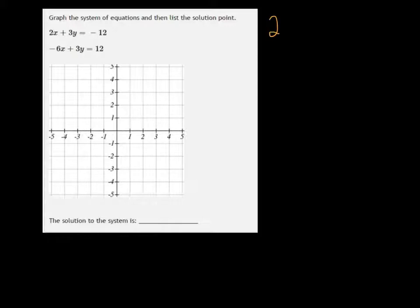So I've got 2x plus 3y equals negative 12. And I want to find a couple of points to graph the line that will fit on this grid. You can see that I only go from negative 5 to 5 either way.